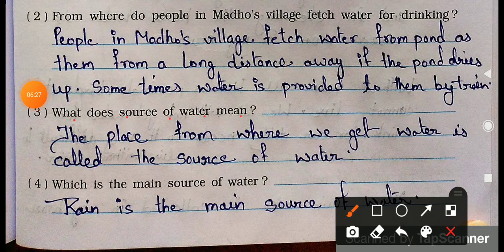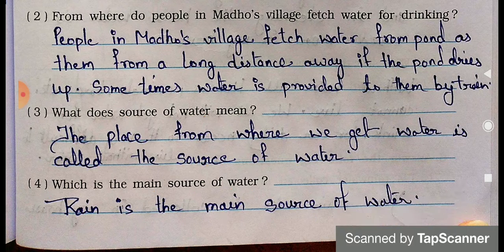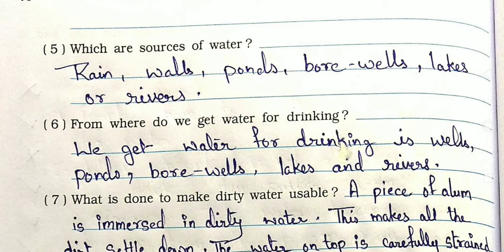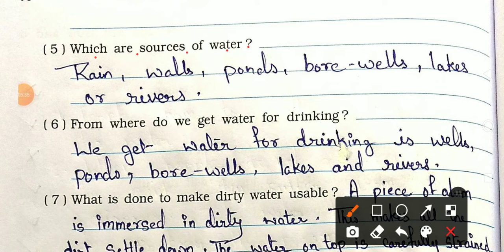Question 3: What does 'source of water' mean? Answer: The place from where we get water is called the source of water. Question 4: Which is the main source of water? Answer: Rain is the main source of water. Question 5: Which are sources of water? Answer: Rain, wells, ponds, borewells, lakes, rivers — these are all sources of water. Question 6: From where do we get water for drinking? Answer: We get drinking water from wells, ponds, borewells, lakes, and rivers.